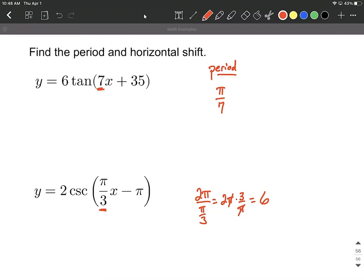Next up, our horizontal shift. When I'm doing these, what I like to do is factor out any multiple on the inside. So we can think of this as being 6 multiplied by the tangent of 7, and then I'm going to put parentheses and factor out that common factor of 7. So we're going to leave that as x plus 5. 7 times 5, if you redistributed, would give you that 35.